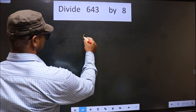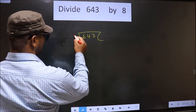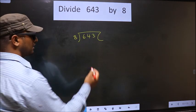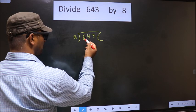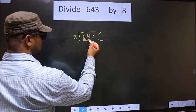That is 643, 8 here. Okay, next. Now, here we have 6. 6 smaller than 8. So, we take 2 numbers, that is 64.